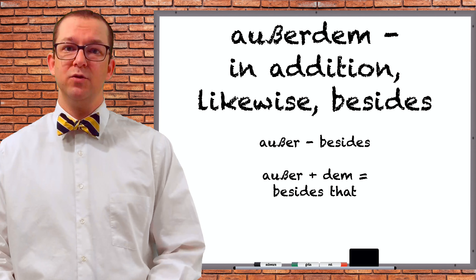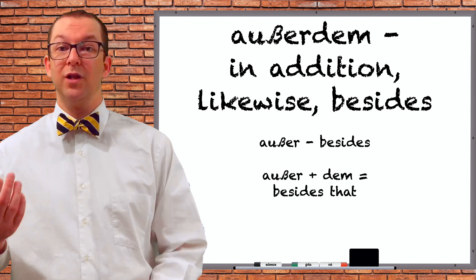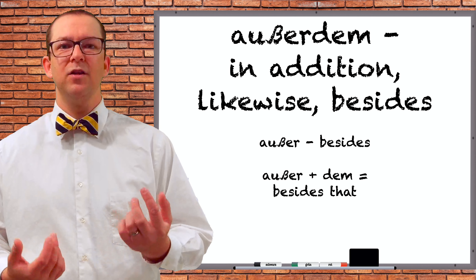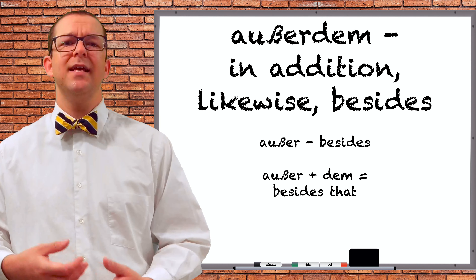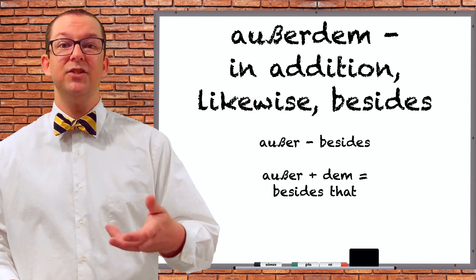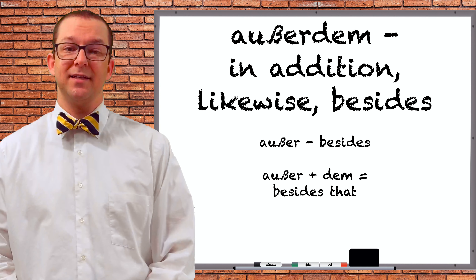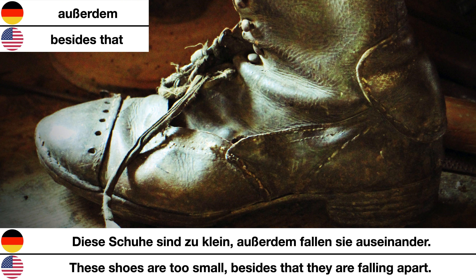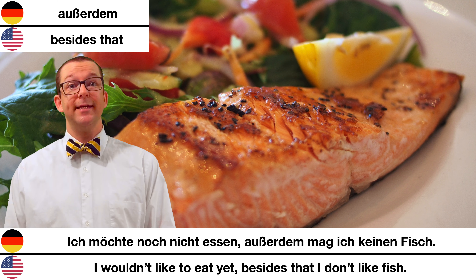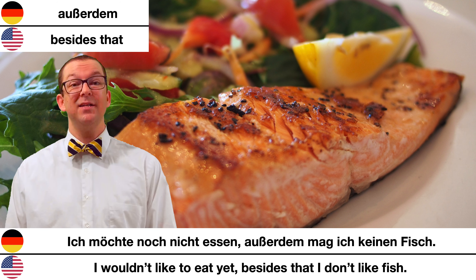The most common way to say in addition to or likewise in German is außerdem. The preposition außer means besides, and when you add dem it means besides that or in addition to that. Diese Schuhe sind zu klein, außerdem fallen sie auseinander — These shoes are too small; besides that, they are falling apart. Ich möchte noch nicht essen, außerdem mag ich keinen Fisch — I would not like to eat yet; besides that, I don't like fish.